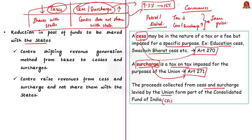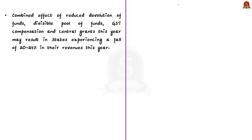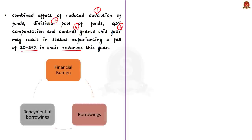Finally, the author states that due to the combined effect of reduced devolution and divisible pool to states, and reduced GST compensation and central grants this year, state governments may experience a fall of 20 to 25% in their annual revenues. To overcome their financial burden while discharging welfare and development responsibilities, states are forced to resort to more and more borrowings. If state governments borrow more, they have to repay it — this repayment burden will again impact state budgets in years to come. Due to this vicious cycle, the economic growth potential of India as a whole cannot be fully realized.